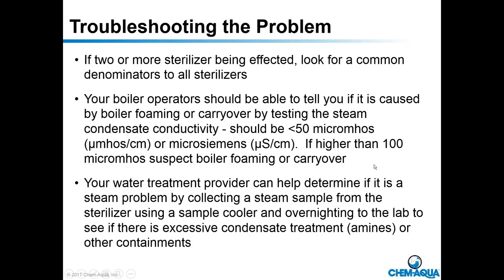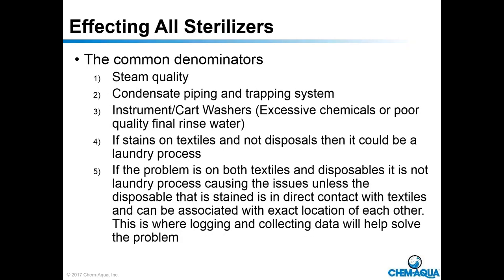If conductivity is higher than 50 — say up to 100 — you may be seeing excessive amines. If it's over 100, you're definitely seeing boiler foaming. If it gets higher than that, you're getting boiler water carryover — actual boiler water going into the steam system at possibly 2,000 to 3,000 conductivity. Your water treatment provider can also help immediately in determining whether it's a steam situation. Common denominators include: steam quality, retention, condensate piping and trapping system, instrument cart washers, excessive chemicals or poor quality final rinse water.